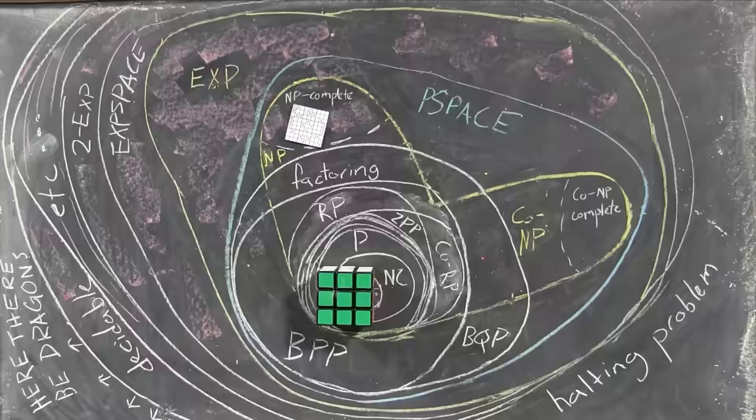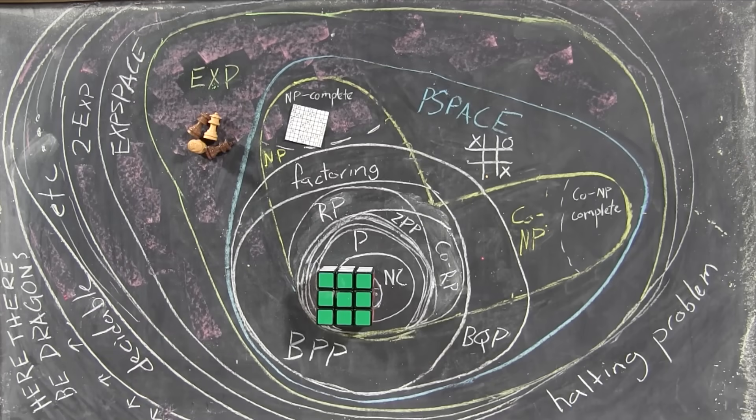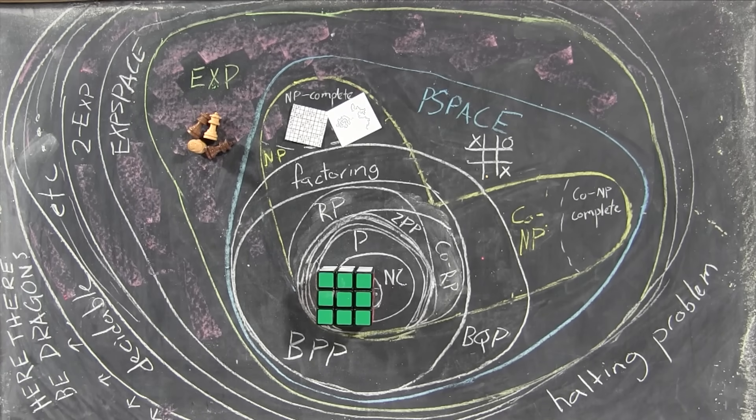To me, the amazing thing about this whole complexity zoo is that we're talking literally about what can be computed in a given amount of space and time. We're not just looking at the nature of computation here, we're looking at the nature of space and time themselves. This mess of computational complexity classes I think ultimately has implications for physics and biology and for our basic understanding of everything.